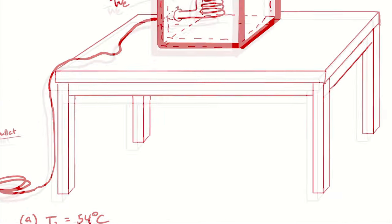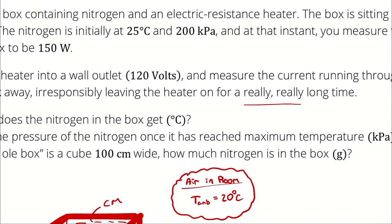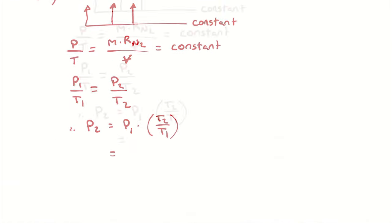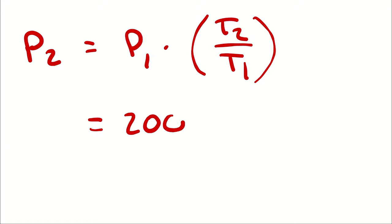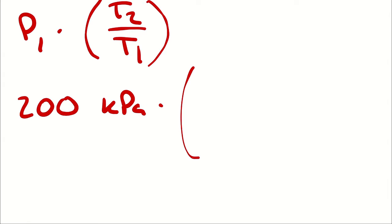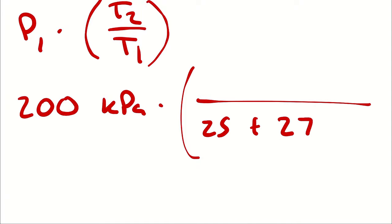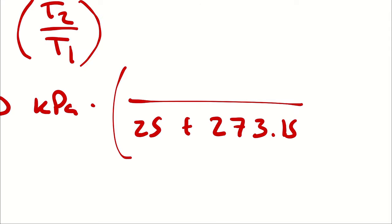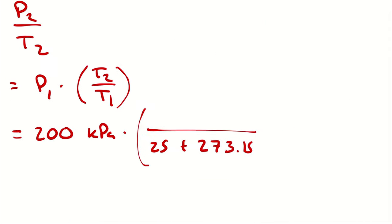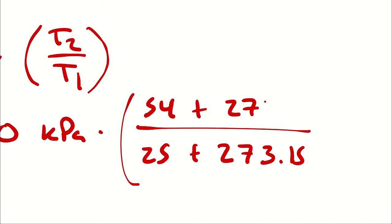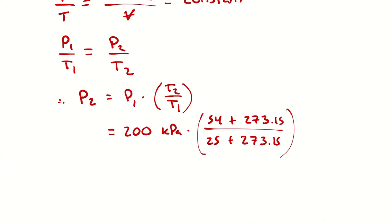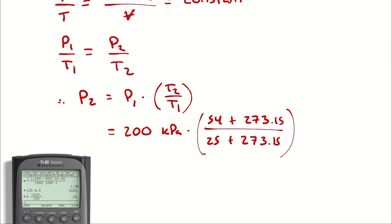The pressure at state 1 was 200 kilopascals and the initial temperature is 25 degrees Celsius. So P2 equals 200 kilopascals times (54 + 273.15) divided by (25 + 273.15), converting both temperatures from Celsius to absolute. Running the calculator: 200 times (54 + 273.15) divided by (25 + 273.15) yields 219.453 kilopascals.